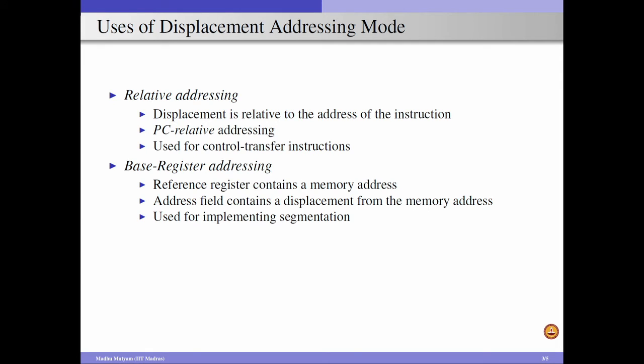The displacement addressing mode can also be used in base register addressing. Here we specify the base address in a specific register and the displacement in the operand field, so the next instruction is executed at an address that is a displacement distance from the contents of the base register. Typically we use segment registers, which contain the address of a segment element, and the displacement is provided in the operand field. Base register addressing is typically used to implement segmentation in systems.